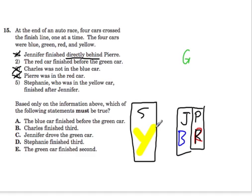And we have one more piece of information. That the red car finished before the green car. So if the red car finished before the green car, then the green car can be here or here. And we know that Charles is in this car. So let's just write that. Here's Charles.